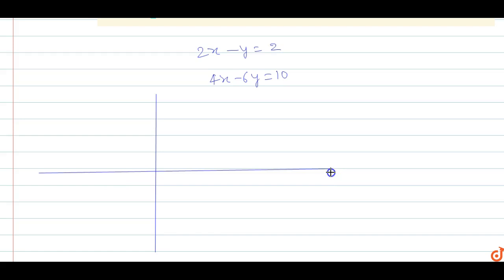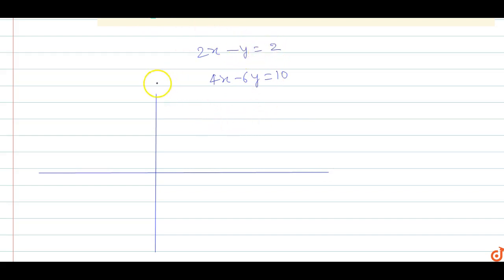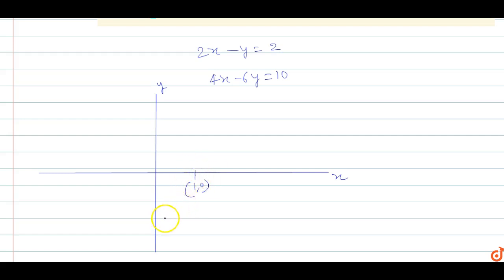Equation 1 is 2x minus y equals 2. It cuts the x-axis at the point (1, 0), so this point is (1, 0), and it cuts the y-axis at the point (0, -2), so this is (0, -2).